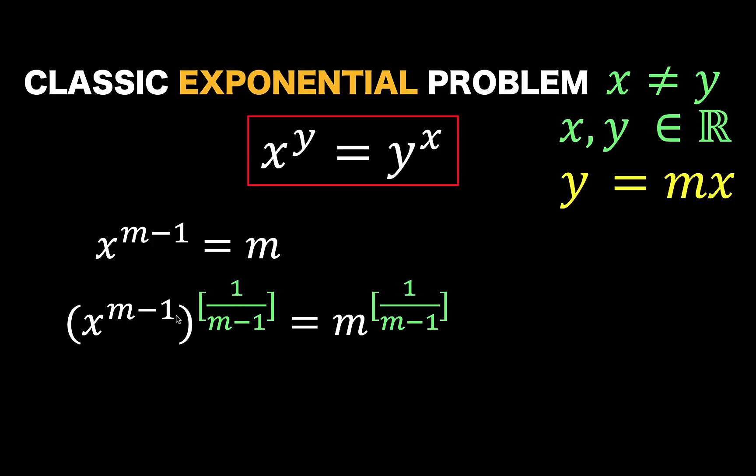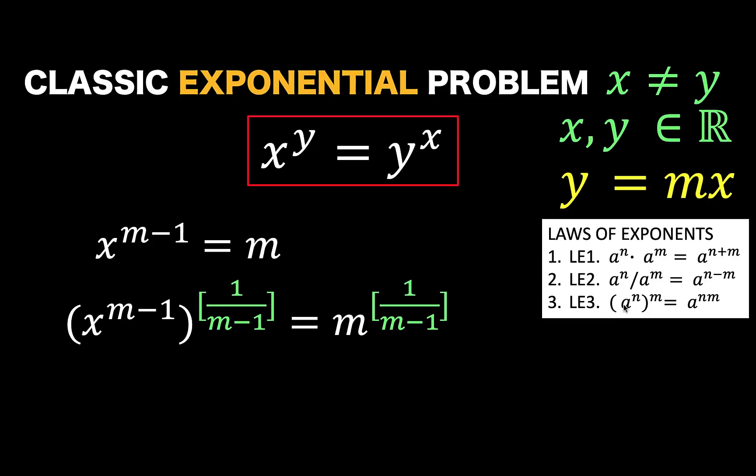The objective is to isolate the variable x. And we do the same thing at the right side. Now, apply again this law of exponent number 3. And since these exponents are multiplicative inverses, the left side is simply the base x, and we just copied the right side. And notice that we now have our solution for x.